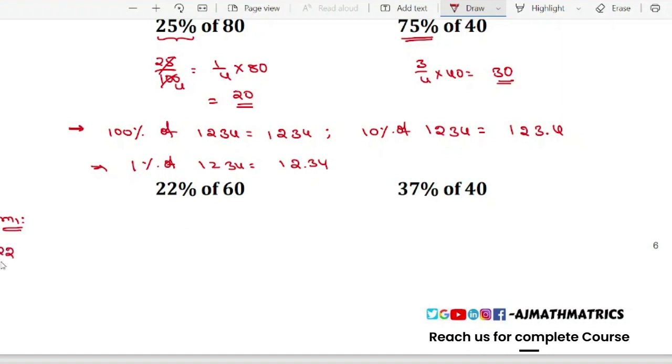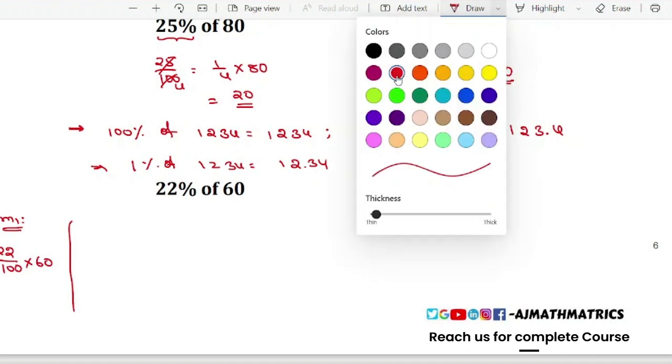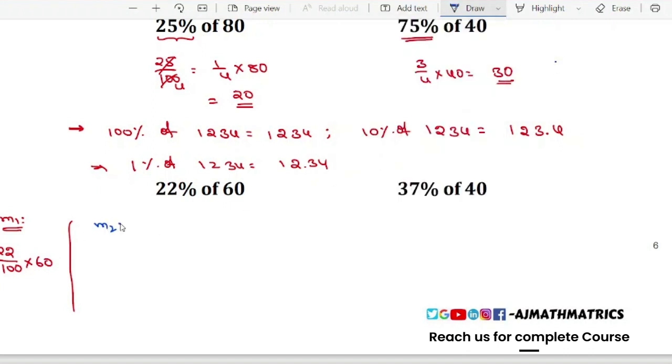Method one is 22 by 100 into 60. In method two, what I'll do is split 22 percentage into 20 percentage plus 2 percentage.